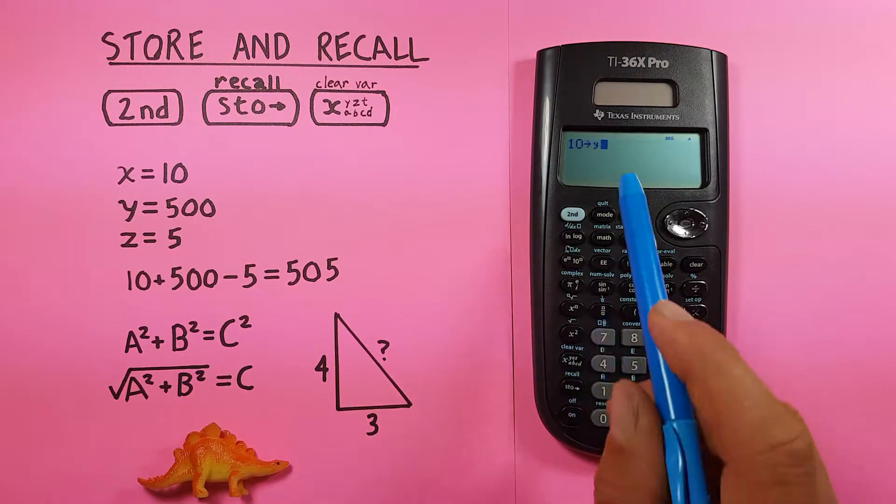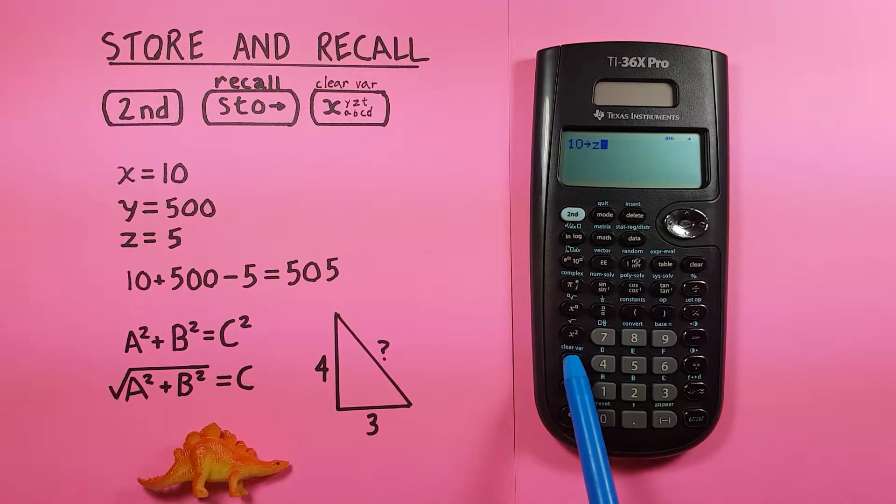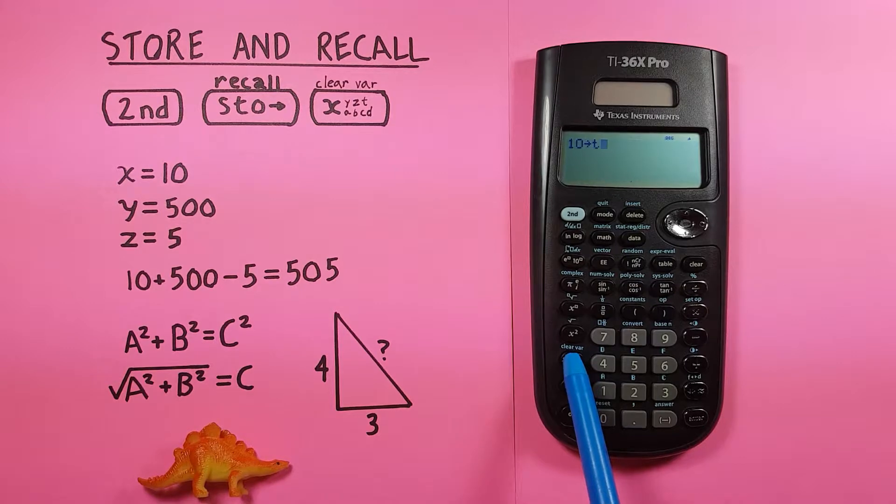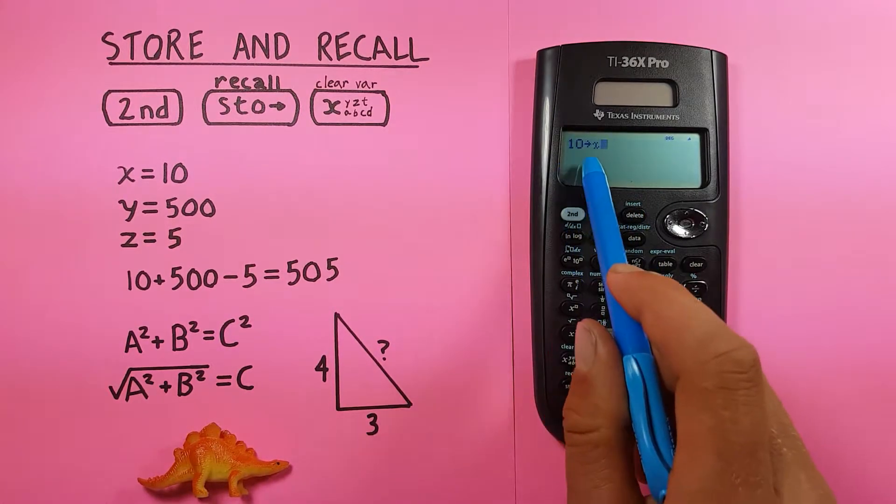If you press it again, you get a Y, again, Z... So those are all your slots. Press it back one more time and we're back to X.